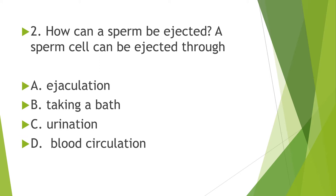How can a sperm be ejected? A sperm can be ejected through: A. ejaculation, B. taking a bath, C. urination, or D. blood circulation.